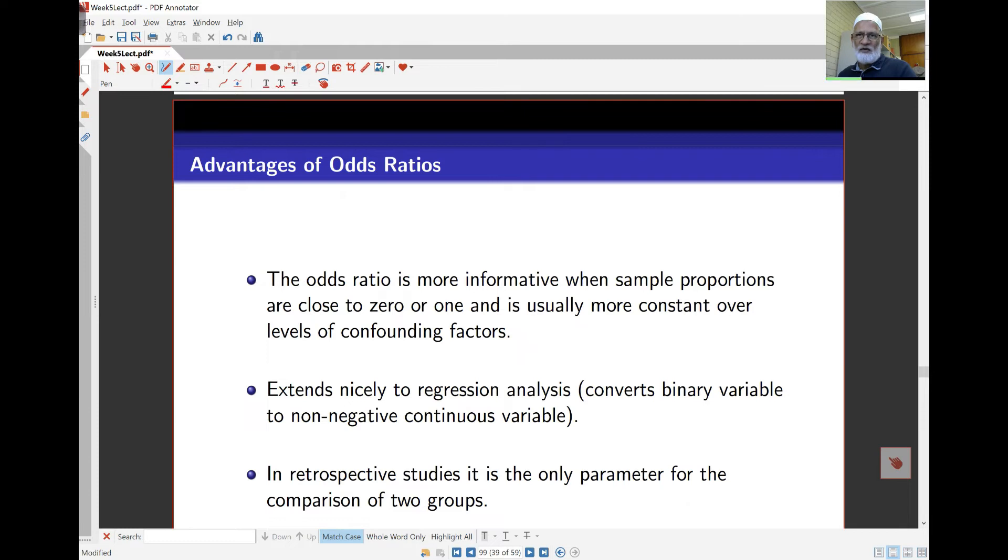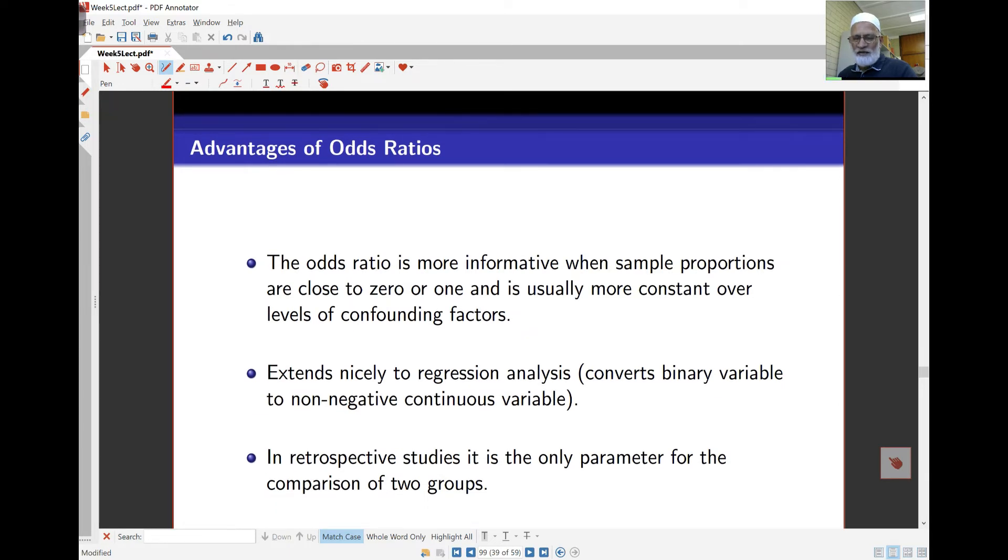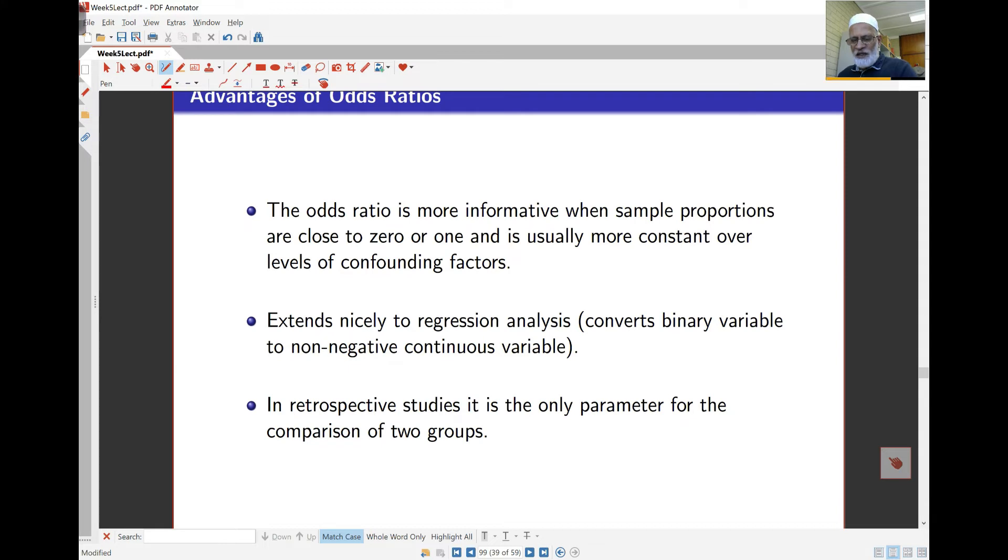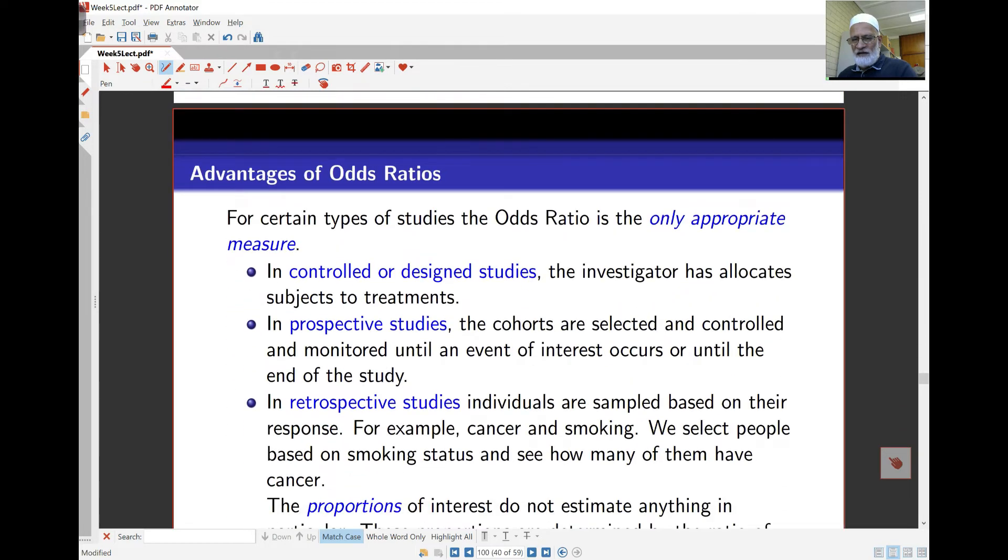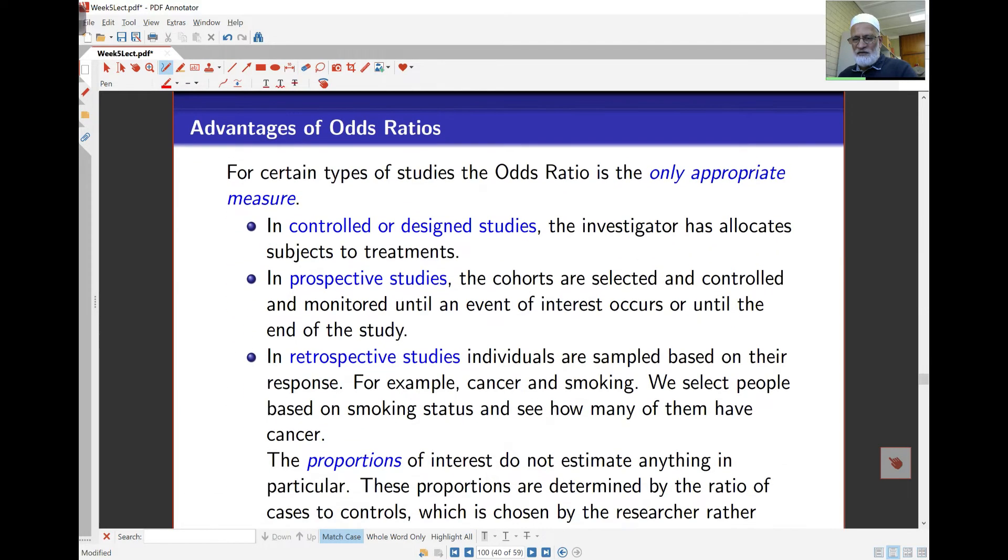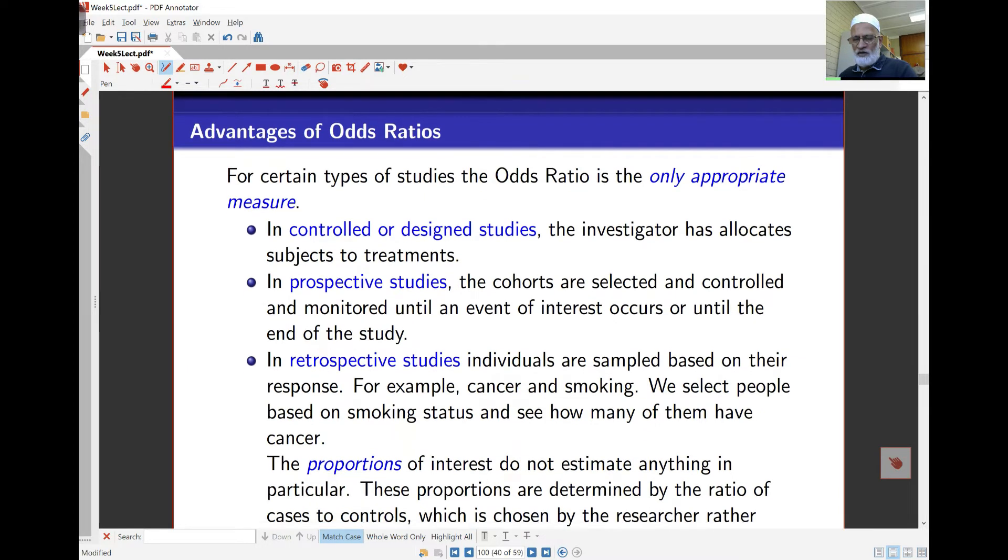It's actually something that we can use for regression analysis. We can't use probabilities because one of the assumptions of regression is we require the response or at least residuals to be normal. We don't find that with probabilities. But we'll see as we go through this course that when we look at the odds ratio, that's a very easy thing to model as a regression for many good reasons. And in retrospective studies, this is the only parameter that we can use to compare between two groups. The idea here is that for certain types of studies, the odds ratio is the only appropriate measure.